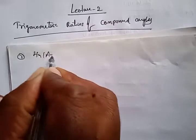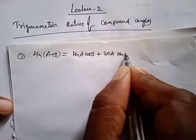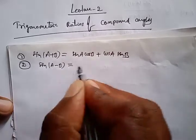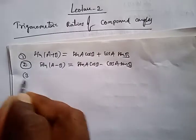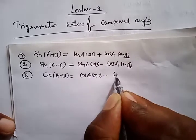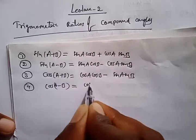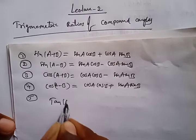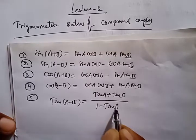The first formula is sin(A+B) = sinA·cosB + cosA·sinB. The second is sin(A-B) = sinA·cosB - cosA·sinB. Third: cos(A+B) = cosA·cosB - sinA·sinB. Fourth: cos(A-B) = cosA·cosB + sinA·sinB. And fifth: tan(A+B) = (tanA + tanB) / (1 - tanA·tanB).